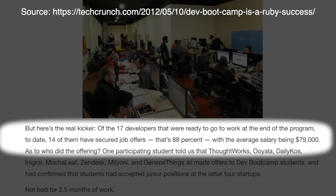The first iteration worked. Of the 17 developers that were ready to go to work at the end of the program to date, 14 of them have secured job offers. That's 88%, with the average salary being $79,000.